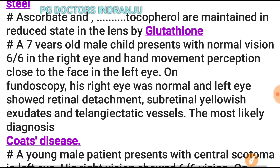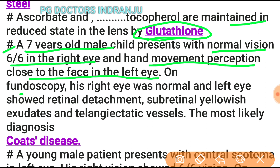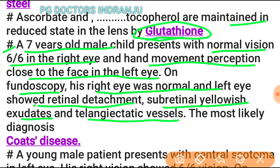Ascorbate and alpha-tocopherol are maintained in the reduced state in the lens by glutathione. A 7-year-old male child presents with normal vision (6/6) in the right eye and hand movement perception close to face in the left eye. Fundoscopy showed normal right eye and left eye with retinal detachment, subretinal yellow exudate, and telangiectatic vessels — most likely diagnosis is Coats disease.